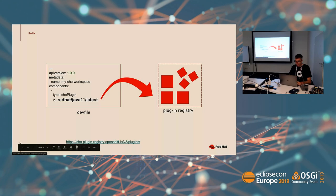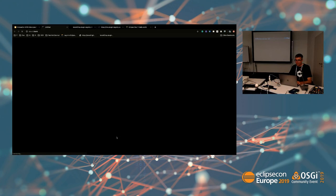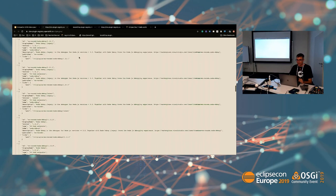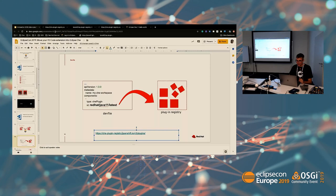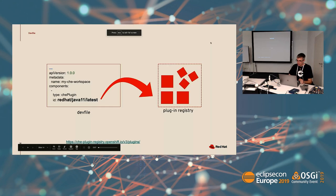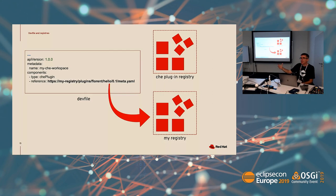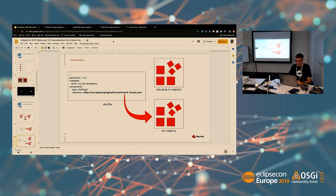When you start Eclipse Che, you have a default registry, and if you go on this registry you can see a list of all the plugins you can use inside Eclipse Che. But maybe I don't want to modify the default plugin registry — I want to run my own plugin registry. So for that I can run a separate registry, and in my dev file, instead of using an ID, I will use a reference and add a link to my meta.yaml file inside my custom registry.